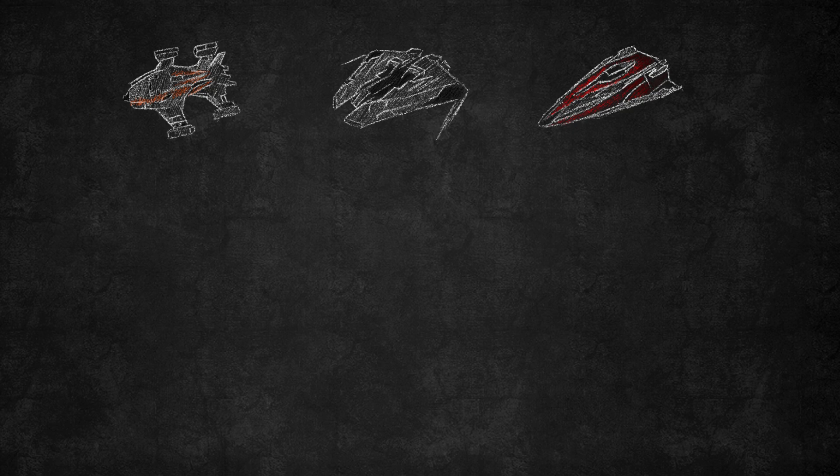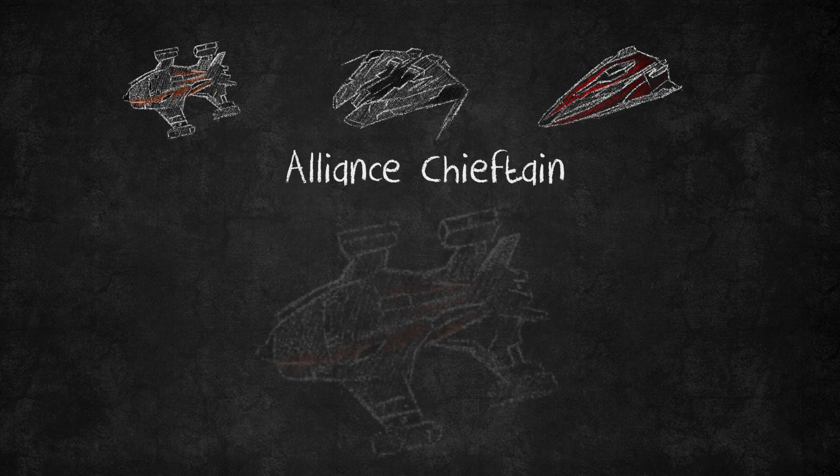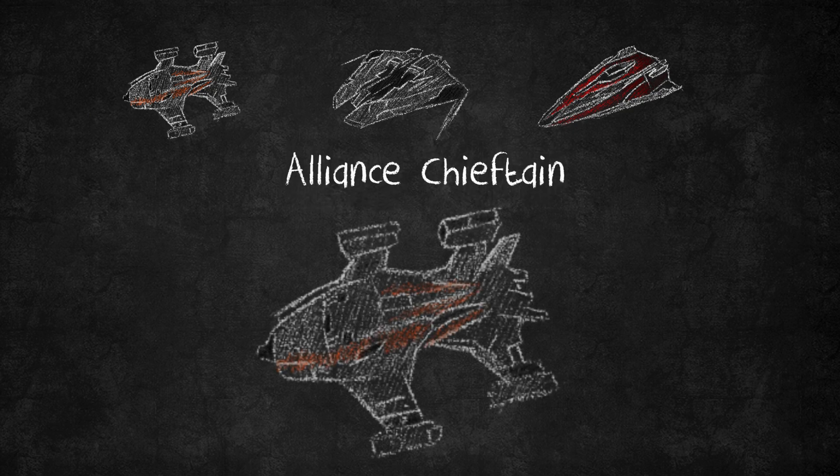The first ship we'll cover is everyone's favourite, the Alliance Chieftain. The Chieftain is rightly one of the meta-AX ships because, despite having a very strong hull, it retains excellent speed and agility, which means we don't need to rely on boost or worry about the swarm ever hitting us, because we can exploit that speed and agility.